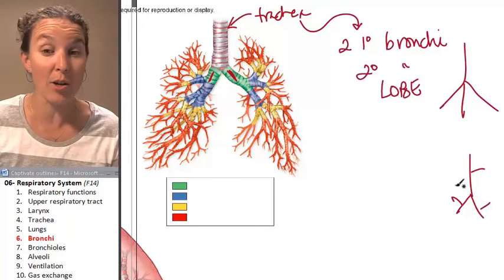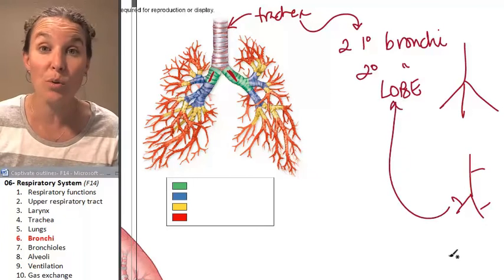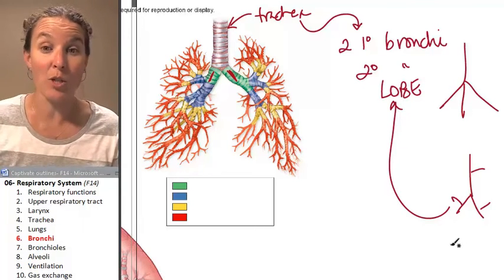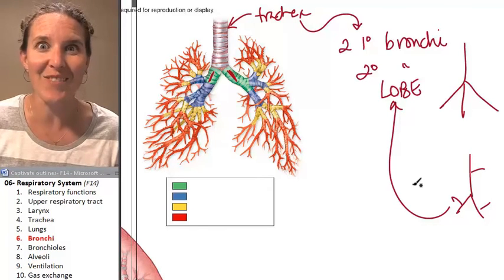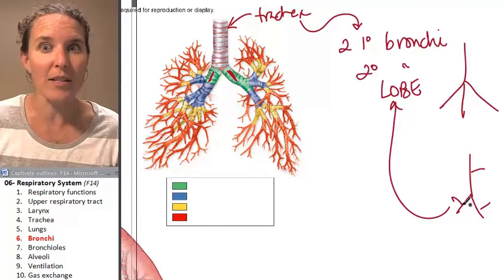if we only have two secondary bronchi, it means we only have two lobes of our lung, which means we must be on the left side. It must be the left lung. It must be the left secondary bronchus.